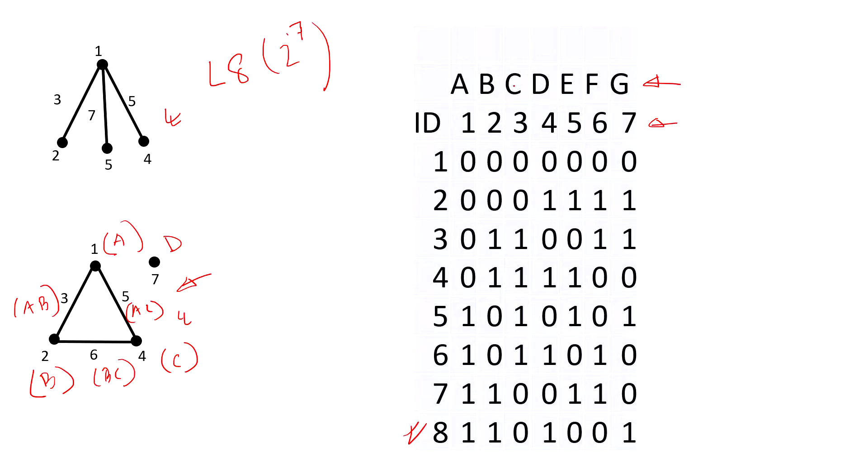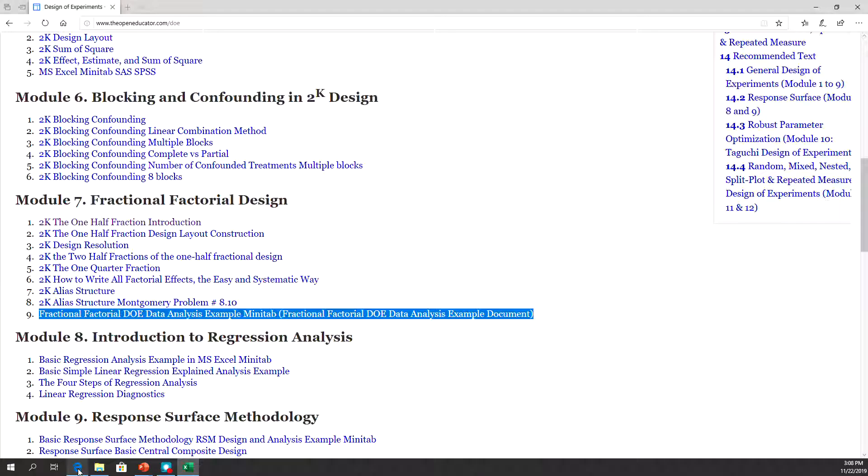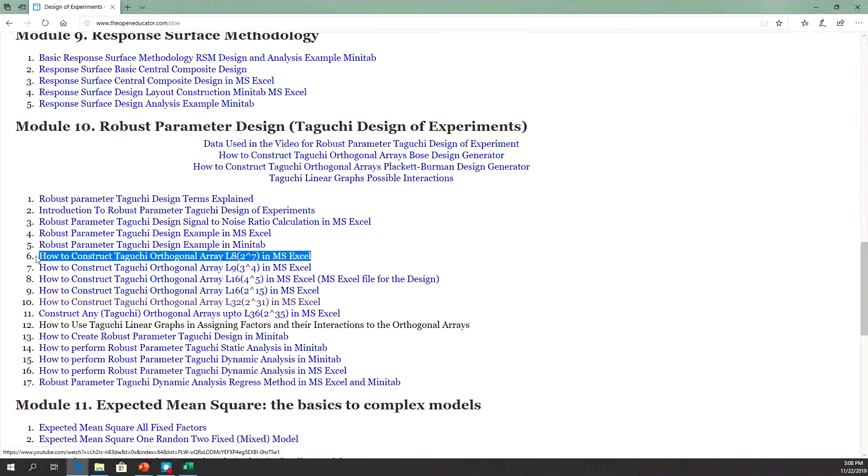Now, if you know there would be an interaction between A and B, instead of that, what we can do is assign factor A in column one, factor B in column two, and then column three becomes the interaction of A-B. You can check this design and how it's created in this Excel file, which is also uploaded on OpenEducator.com.